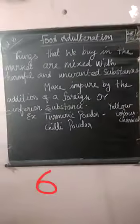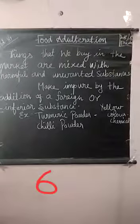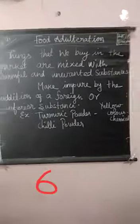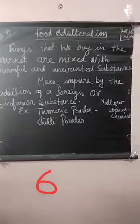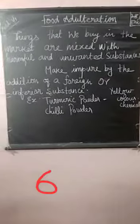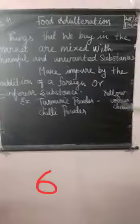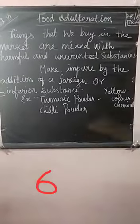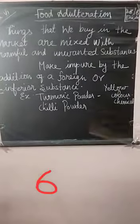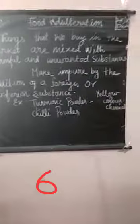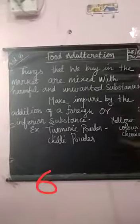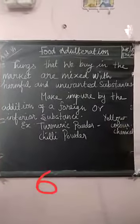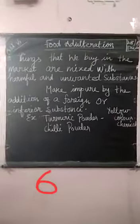Food adulteration means the things we are buying in the market are mixed with some harmful and unwanted substances. For example, turmeric powder and chili powder that we buy in the market — the turmeric powder is not a pure one. In turmeric powder, they add some yellow color chemical substances. That is food adulteration. In chili powder, they add red color chemicals.